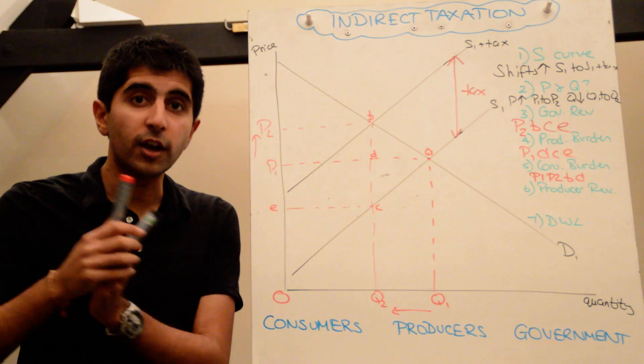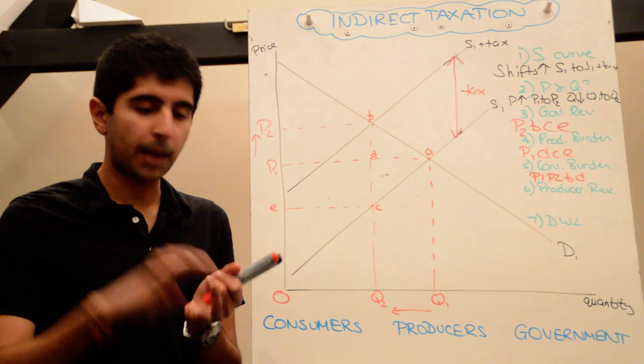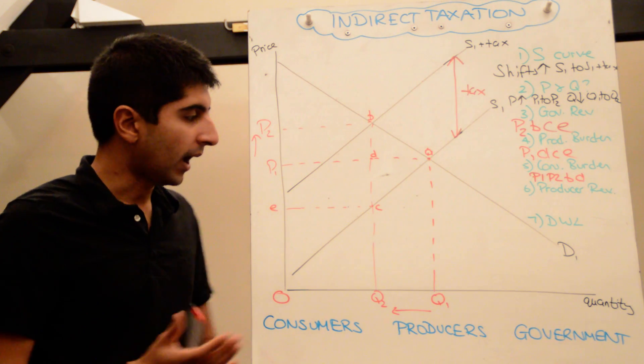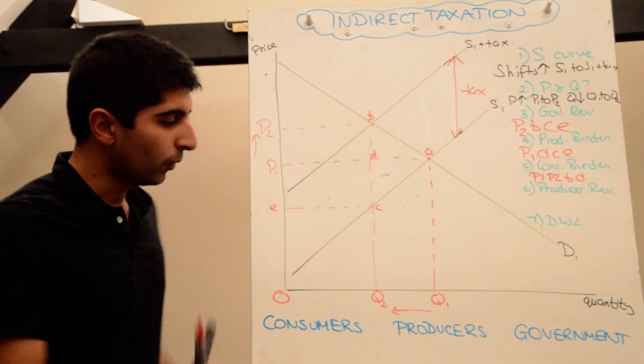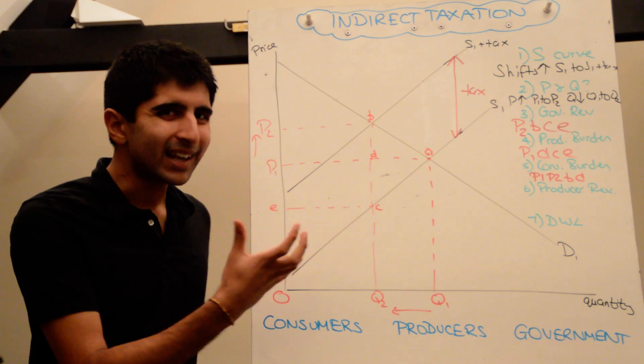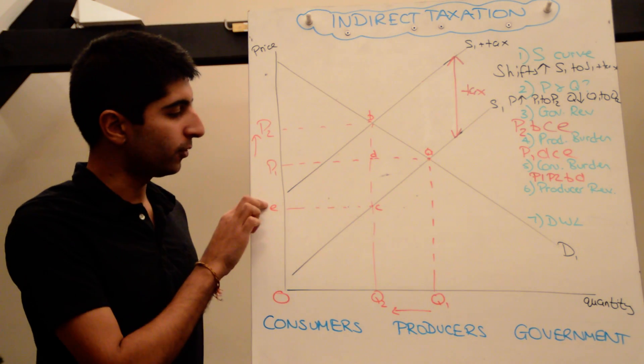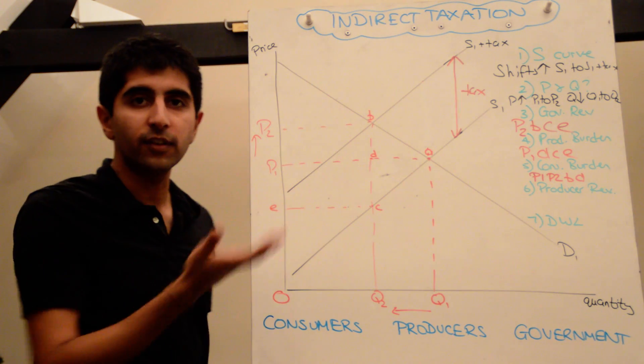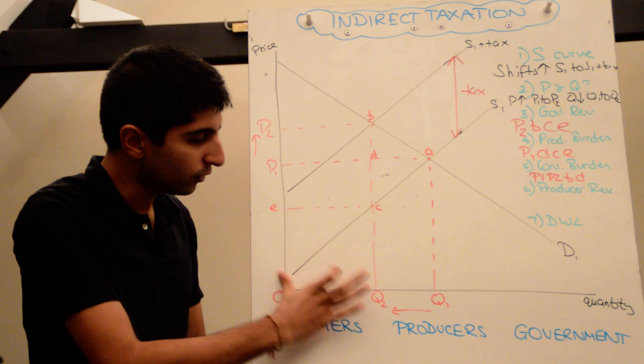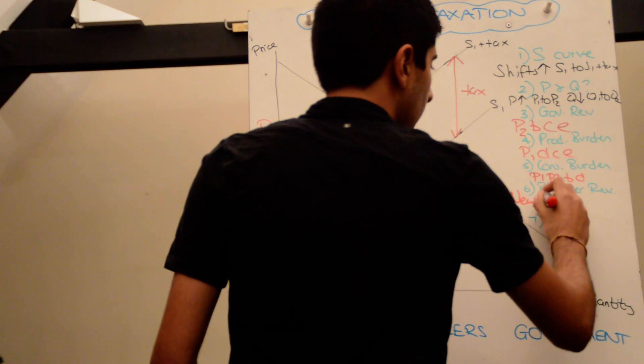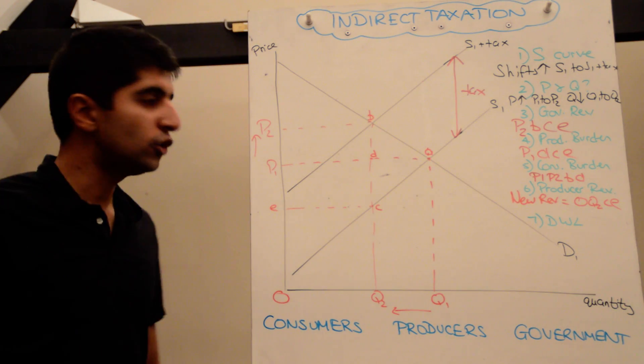We can also work out the impact on producer revenue. The new revenue that producers are gaining: they're selling Q2 units here, and the price they're getting is E. They're not getting P2 because they have to pay the difference between E and P2 in tax. That difference in price there is how much the tax is worth. They don't actually keep any of that box at all; it all goes to the government. So new revenue is equal to zero, Q2, C, and E. That's the new producer revenue.